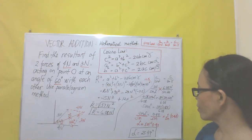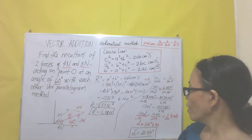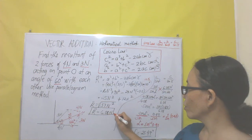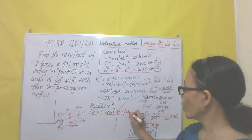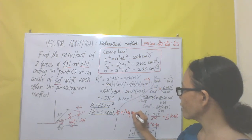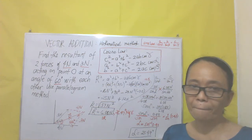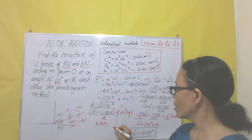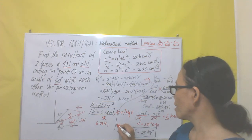So the final answer is: the resultant is 6.08 newtons at 25.47 degrees north of east. Alternatively, this can be expressed as 6.08 newtons at 64.53 degrees east of north.